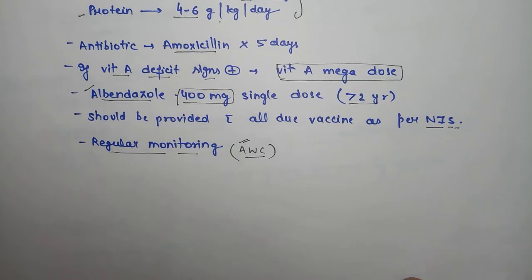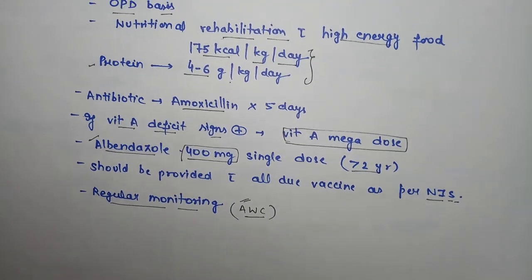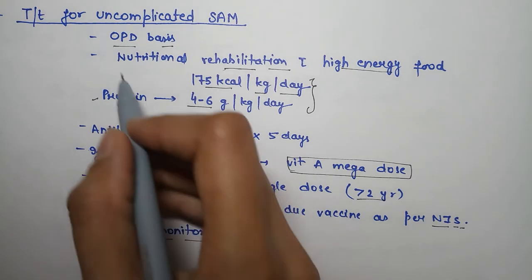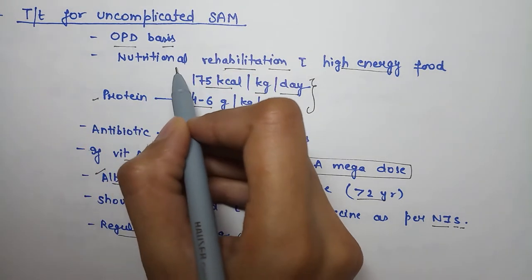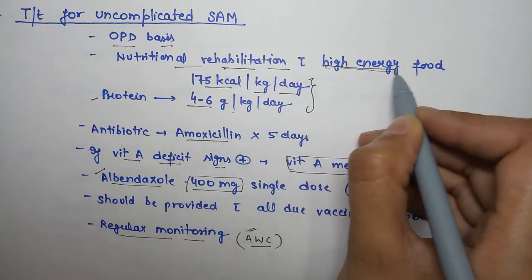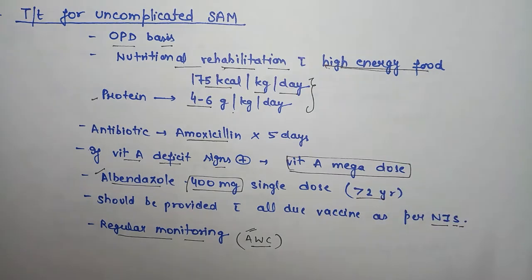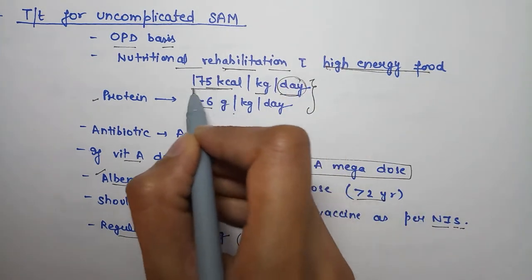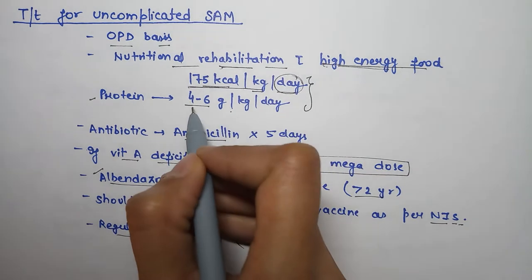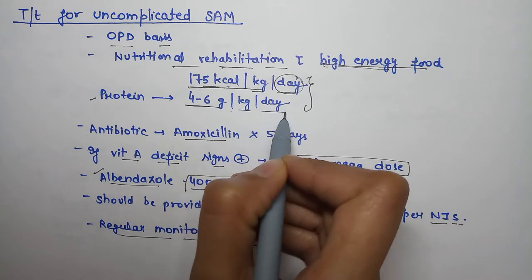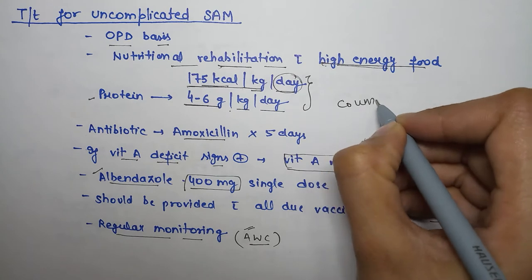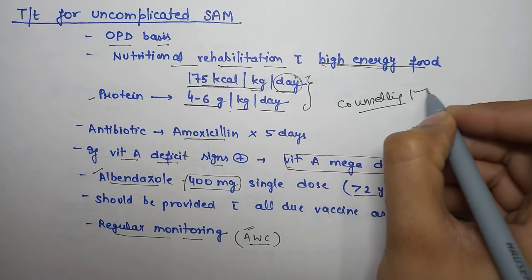Let's talk about treatment for uncomplicated SAM. This is mainly OPD-based treatment with nutritional rehabilitation as the mainstay. We provide high-energy food - 175 kilocalories per kg per day, along with 4-6 grams protein per kg per day. Since this is home-based management, counseling of the family is very important.